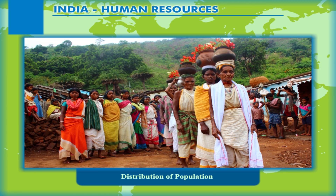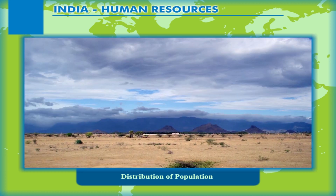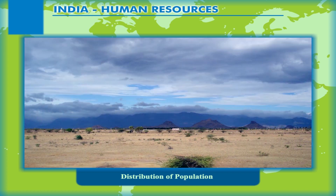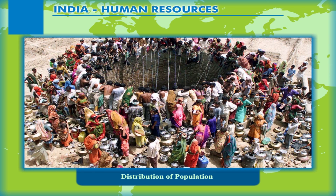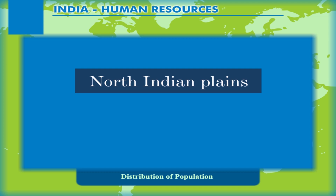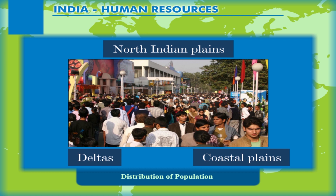Such an uneven spatial distribution of population in India suggests a close relationship between population and physical, socio-economic and historical factors. As far as the physical factors are concerned, climate along with terrain and availability of water largely determines the pattern of population distribution. Consequently, we observe that the North Indian Plains, Deltas and Coastal Plains have higher proportion of population than the interior districts of southern and central Indian states, the Himalayas, and some of the northeastern and western states.